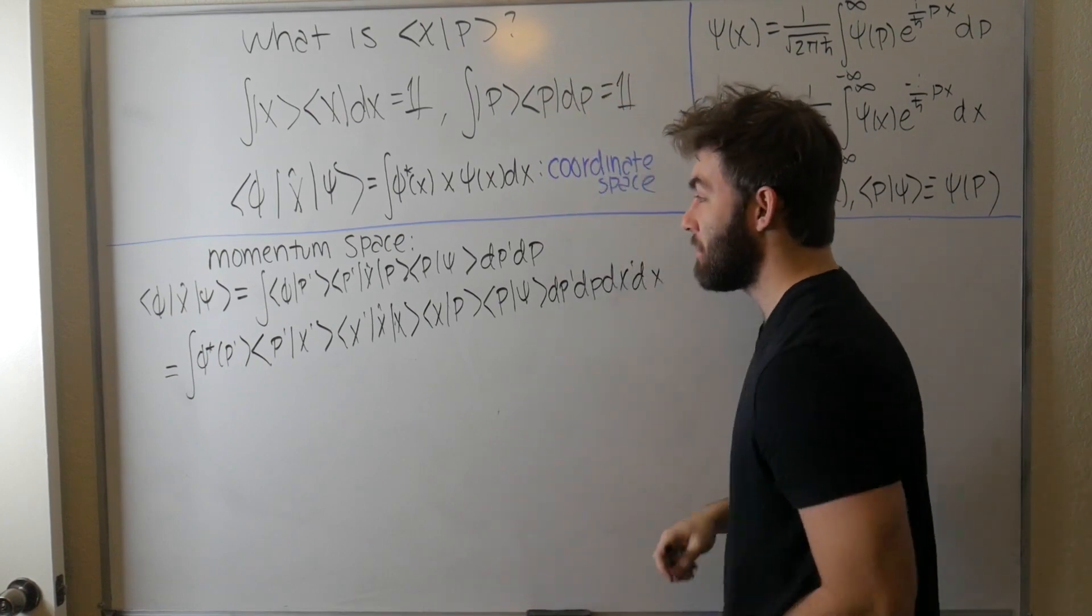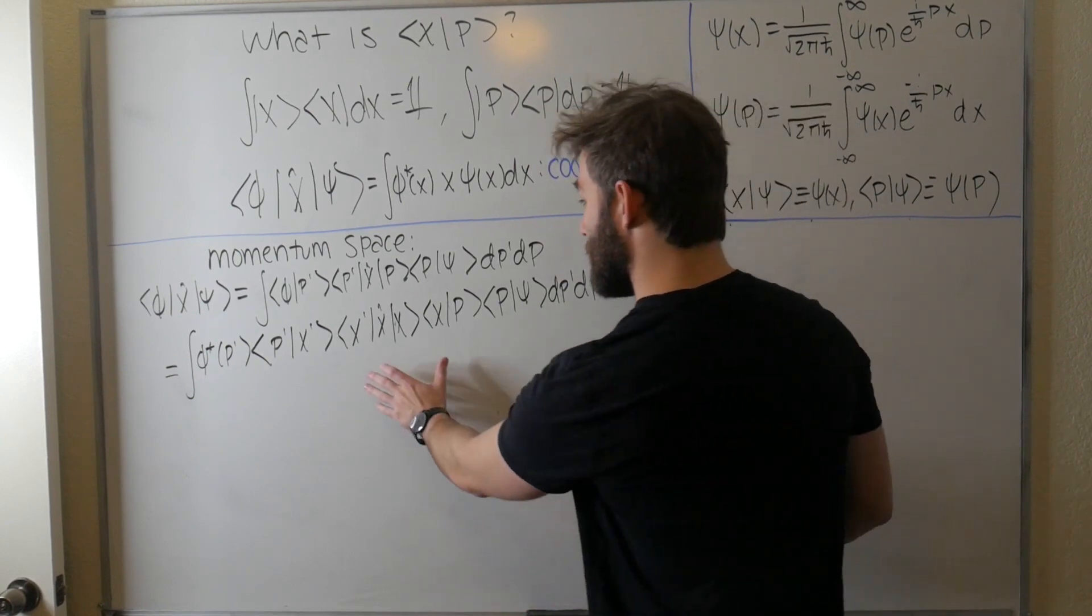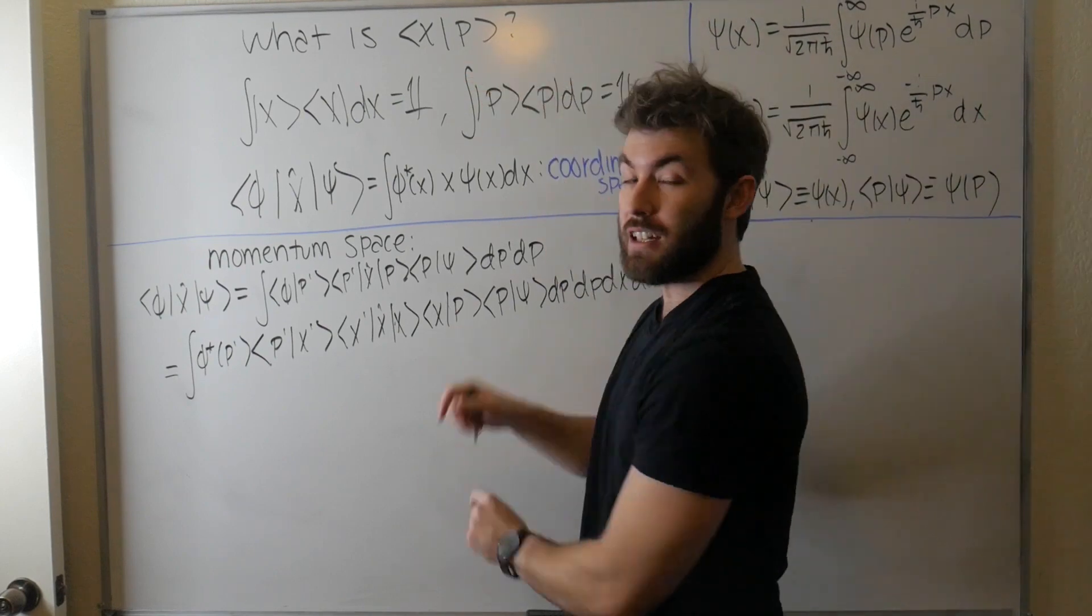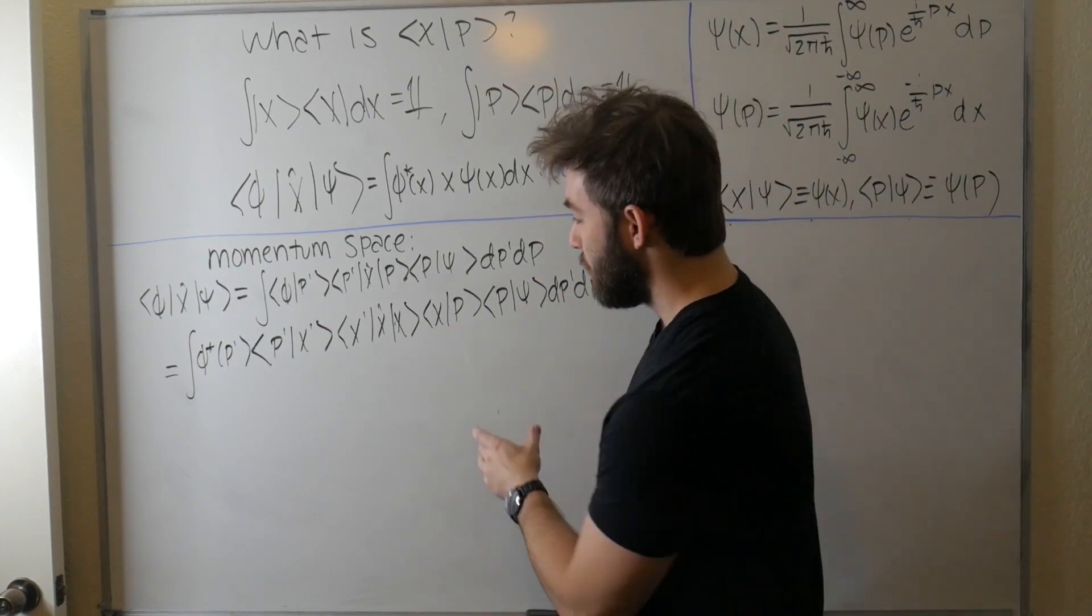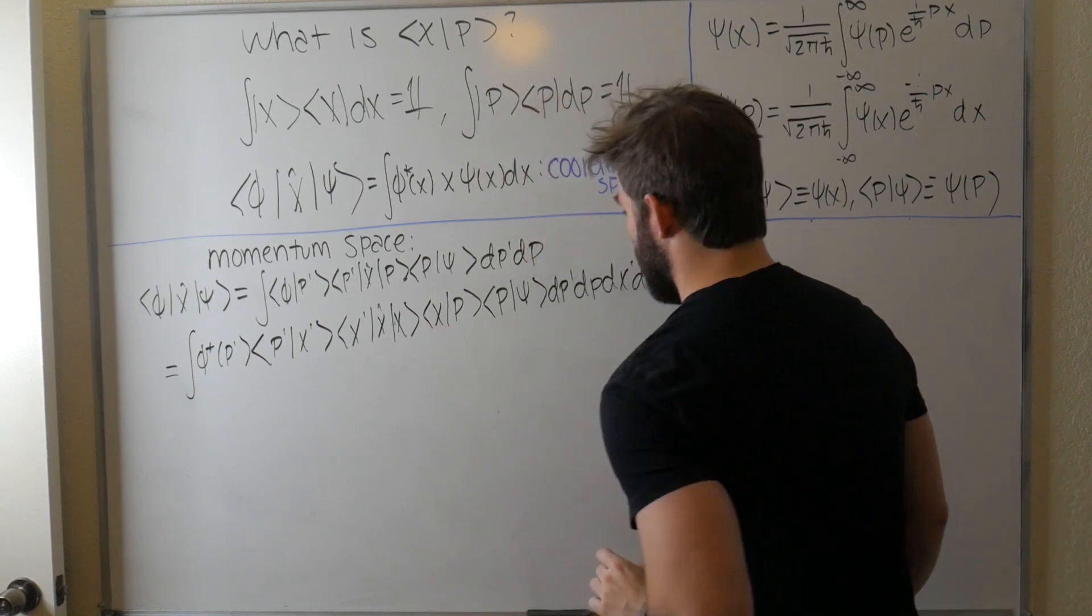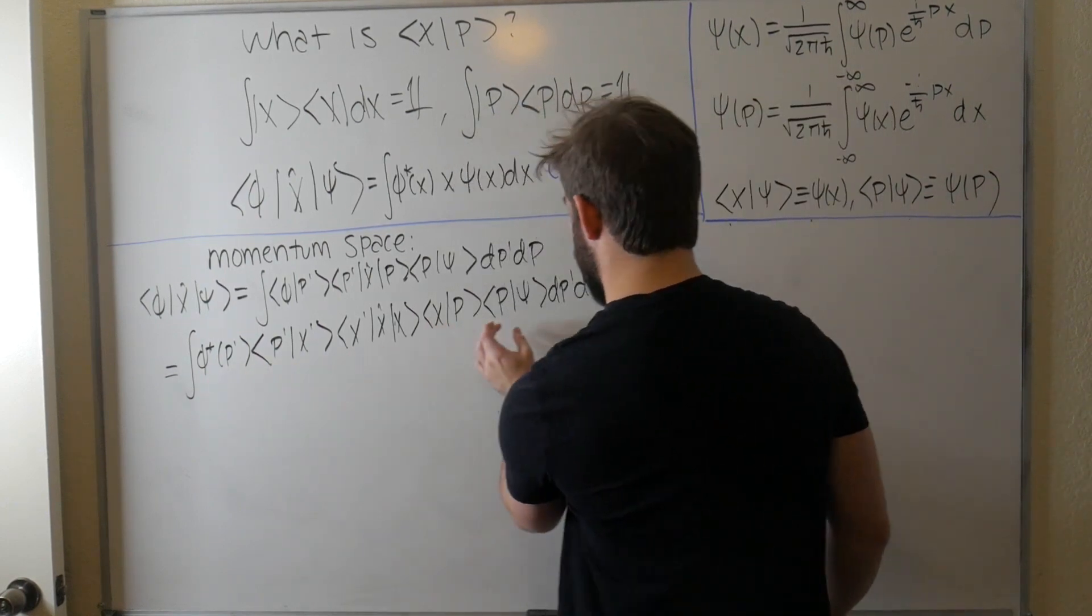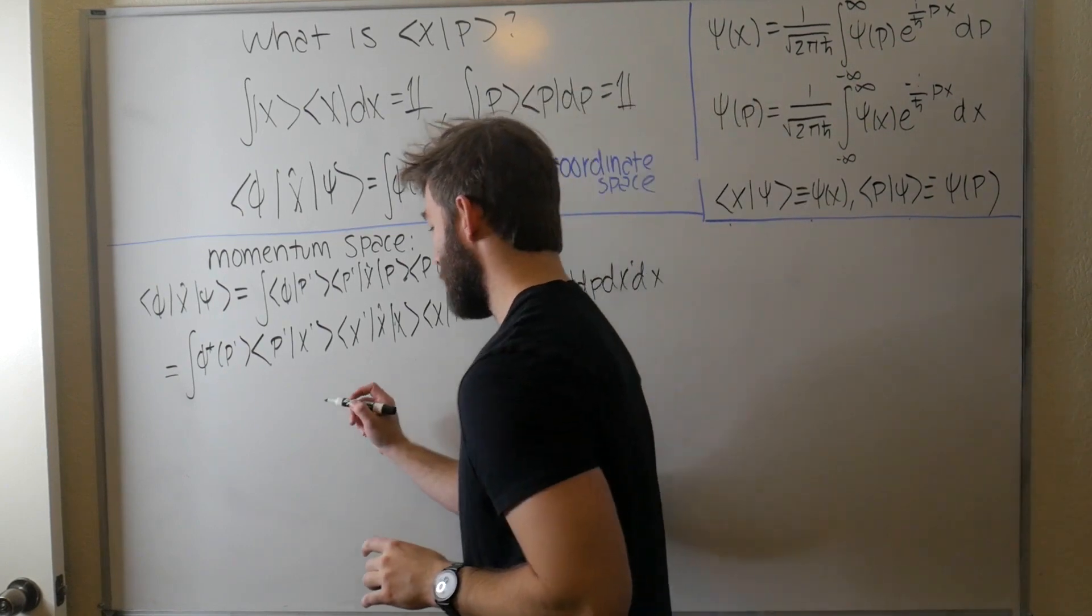And now you can see why I'm taking these matrix elements in the first place, because in expanding one more time, now we have what we're interested in in the first place. So if we can simplify this a bit, we'll be able to see what this thing is here. Okay? And now we know what this is, we know what this is, and we know what this is, so let's simplify this a little bit.